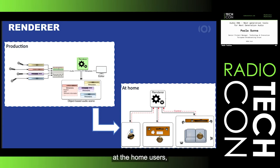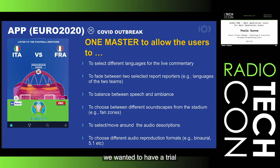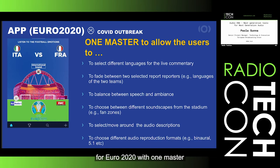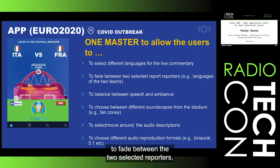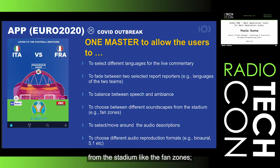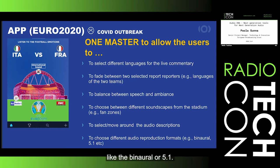This year, before the COVID outbreak, as EBU we wanted to have a trial with Dolby and Fraunhofer using AC4 and MPEG-H during Euro 2020 UEFA. We were thinking about developing an application with one master to allow users to select between different languages for live commentary, to select the reporter speaking the languages of the two teams, to improve intelligibility by balancing speech and ambience, to choose between different soundscapes from the stadium like fan zones, to move around audio description — which for this trial were to be radio commentaries — and to choose between different audio reproduction formats like binaural and 5.1. Unfortunately, with COVID, we didn't manage to carry out this trial.